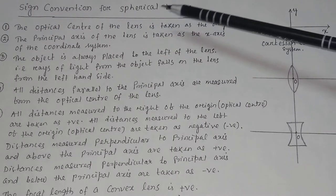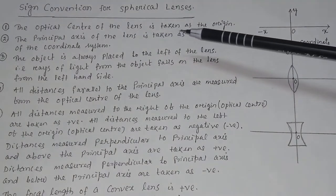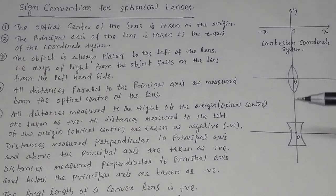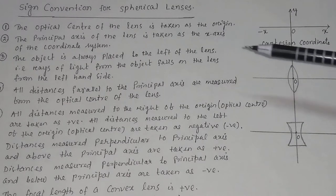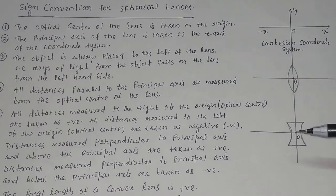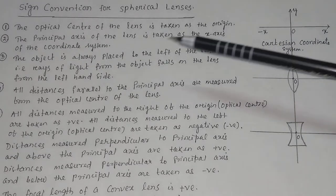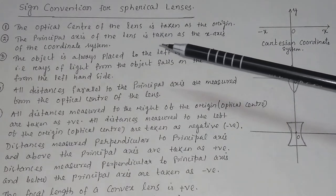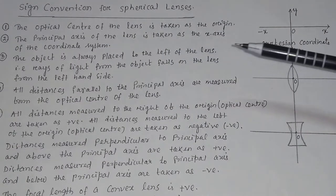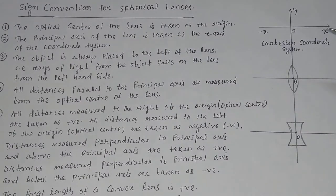Number 1: the optical center of the lens is taken as the origin. In the Cartesian coordinate system you have an origin, and in a convex lens or concave lens, the optical center of the lens is taken as the origin. The principal axis of the lens is taken as the x-axis of the coordinate system.